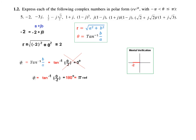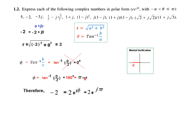So instead, phi is tangent inverse of 0 over 2, which equals 180 degrees, which equals pi radians. Note that tan inverse of 180 and tan inverse of 0 both give 0 on the calculator, so the calculator alone is insufficient here. Our final answer is minus 2 equals 2 e to the j phi, giving 2 e to the j pi.